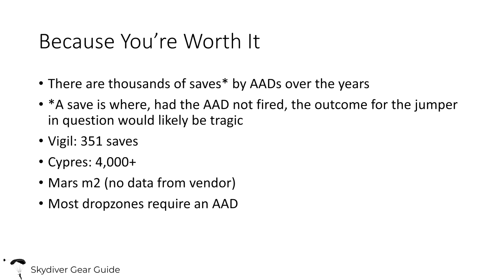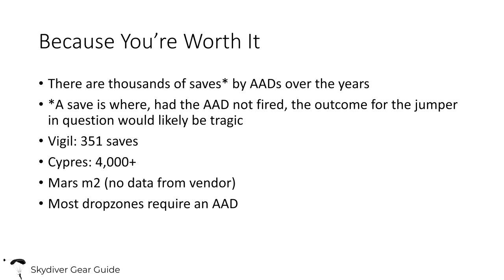Why do you need an AAD? There are thousands of recorded saves from the three vendors over the years. If you skydive long enough, you're going to know people who have been saved by AADs. A 'save' is where the AAD activated and likely saved someone's life or prevented a more tragic outcome. Of the three primary vendors, Vigil has recorded 351 saves on their website, Cypress has over 4,000 saves, and the Mars M2 has some saves as well.